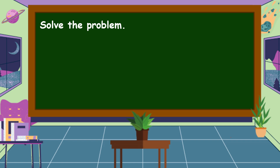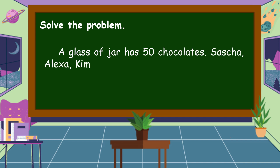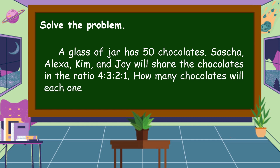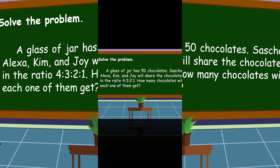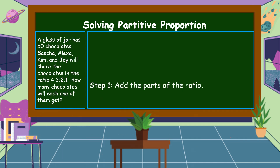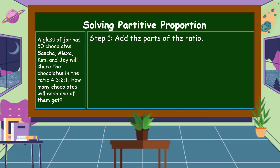For our next example, we analyze a partitive proportion problem: A glass jar has 50 chocolates. Sasha, Alexa, Kim, and Joy will share the chocolates in the ratio of 4:3:2:1. How many chocolates will each one of them get? Step 1: Add the parts of the ratio. 4 + 3 + 2 + 1: 4 plus 3 is 7, plus 2 is 9, plus 1 is 10. The sum of the parts is 10.